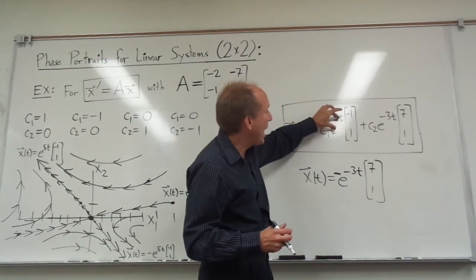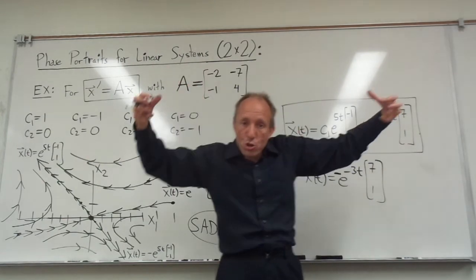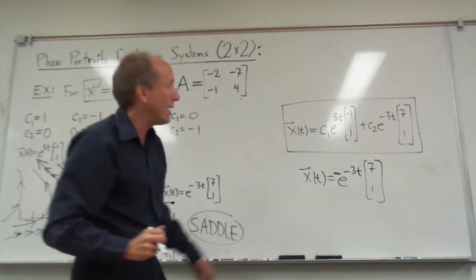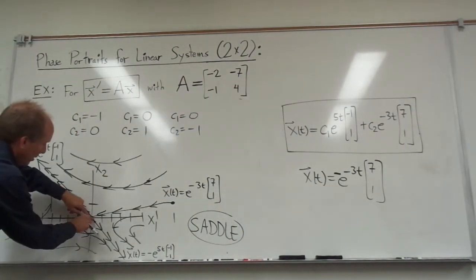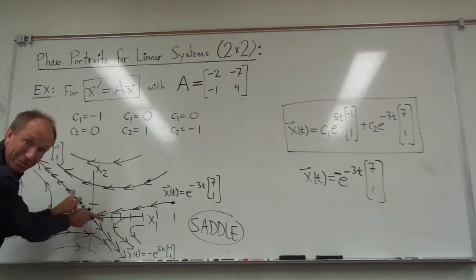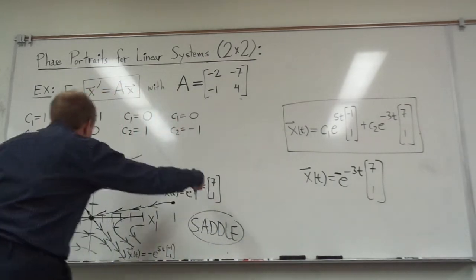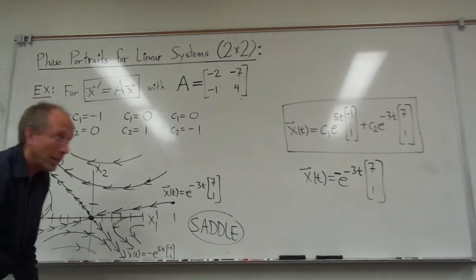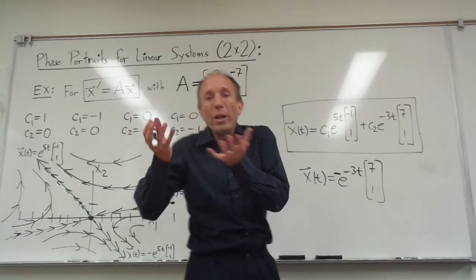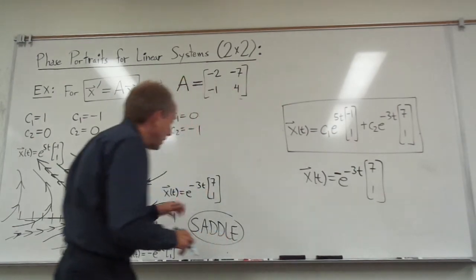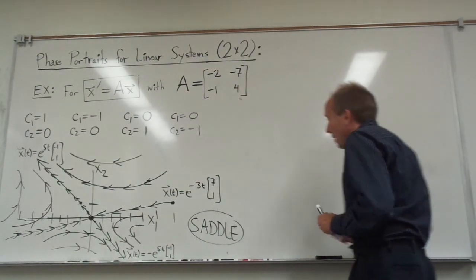See, this e to the 5t blows up to infinity, whereas the e to the negative 3t shrinks to the origin as time goes on. So as time gets bigger, the exponential one, which is the one that's, the positive exponential one, is diverging from the origin. Whereas the negative exponential term is collapsing towards the origin. So the signs of the eigenvalues are opposite. One of them is positive, one of them is negative. We're going to get a saddle. Now, you can imagine, you can probably imagine that if we...